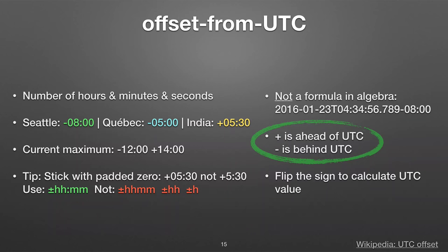A practical tip: when you use offsets, put in the padding zero in front of the hour, add the minutes even if it's zero, and put a colon. I've run into libraries that don't expect alternate variations. And it's very readable — when I see a plus or minus and a colon, I know that's an offset.